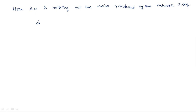So how can we write ΔN? ΔN equals KT·BN·G — when it passes through the network, the gain of the network is added. Here, K is Boltzmann's constant, which is always constant, and BN is the noise bandwidth, which is also constant because the noise bandwidth is decided by the network — it determines how much noise passes through.